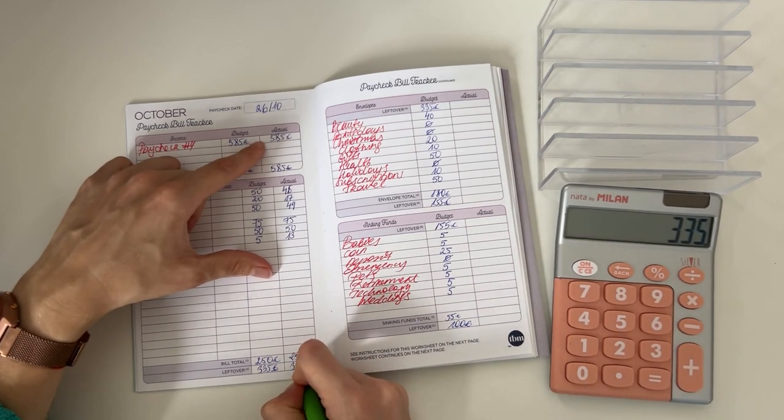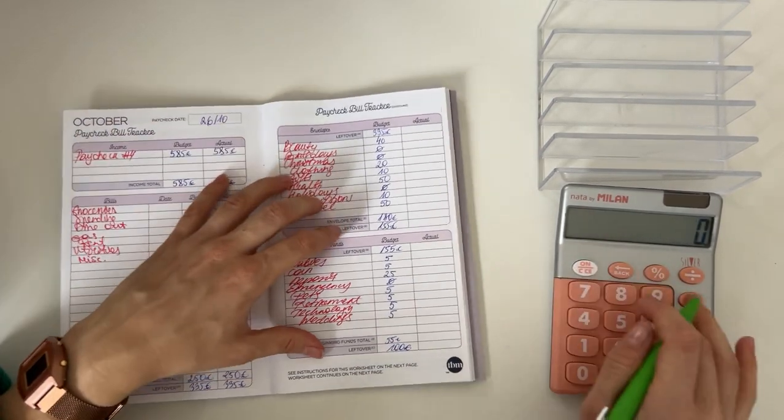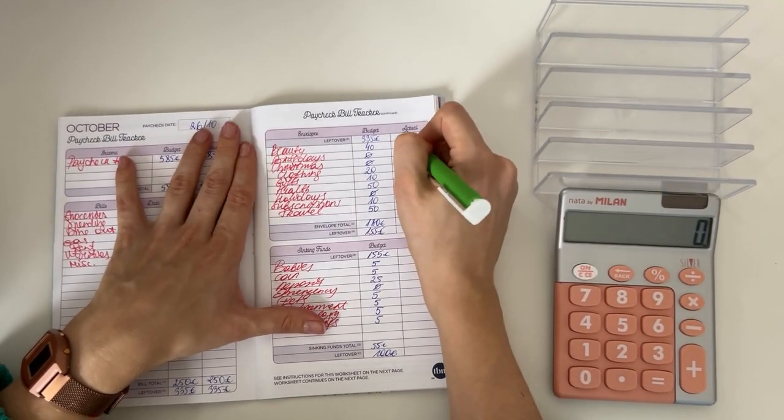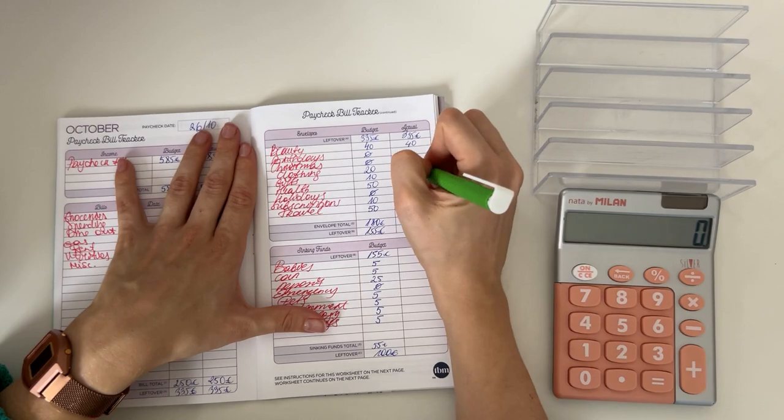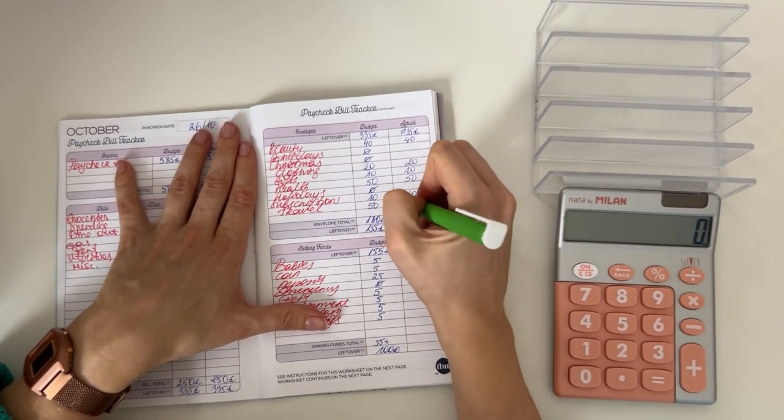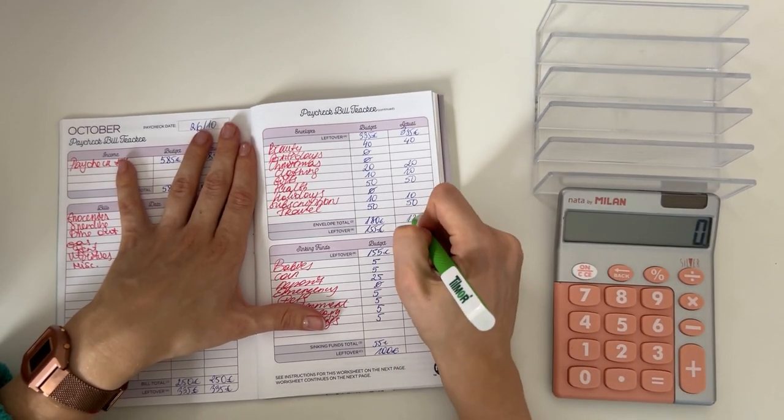Then we brought that here to short-term sinking funds and here we put 40 in beauty, 20 in clothing, 10 in gifts, 50 in health, 10 in subscriptions and 50 in travel. So that was 180 in total. 335 minus 180 was 155.